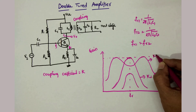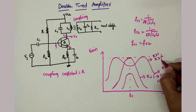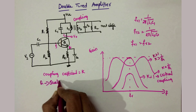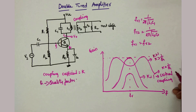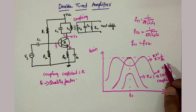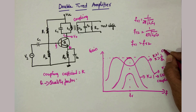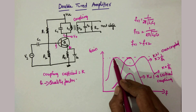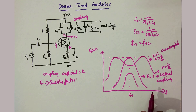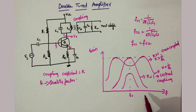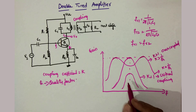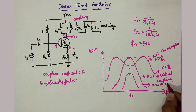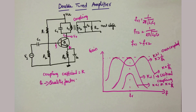The case for k > 1/Q is called over-coupled. The over-coupled response shows a double peak. Such a double-peak response is useful when more bandwidth is required. The case for k < 1/Q is called under-coupling.